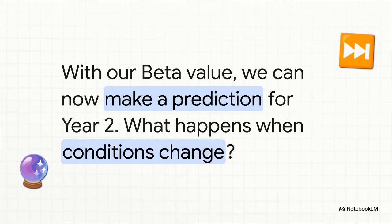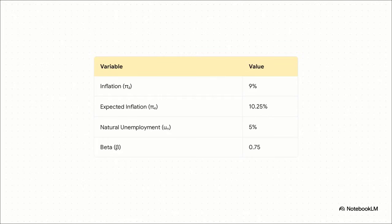Awesome! We've got our secret recipe, and now for the cool part, we can actually use it to make a prediction. So let's fast-forward to year two and see what happens when things start to change. Okay, here's the scene in year two. Inflation has cooled off a bit, down to 9%. But, and pay close attention here, look at what happened to expectations. They've updated. People are now expecting 10.25% inflation, which is exactly what it was last year. See how that works?